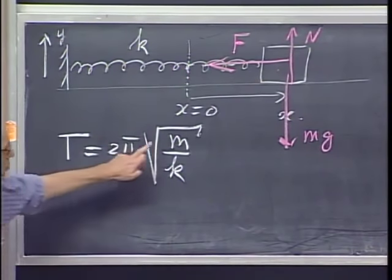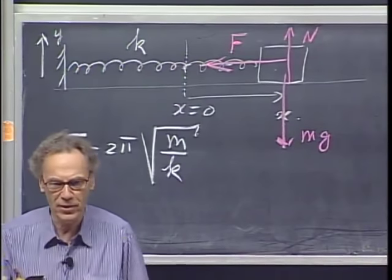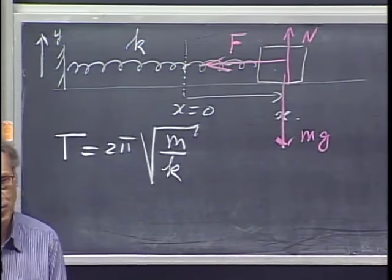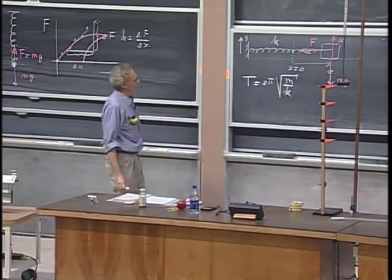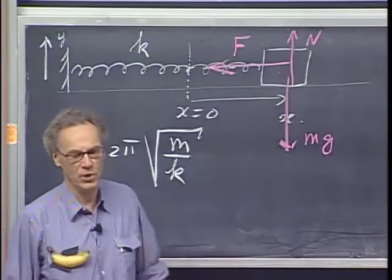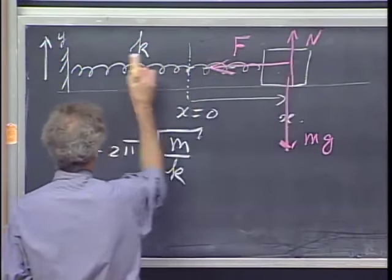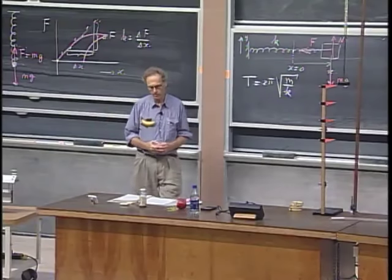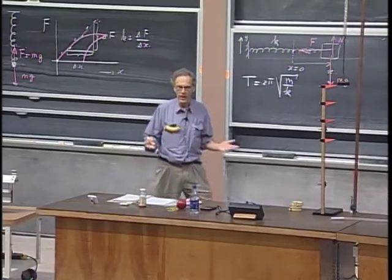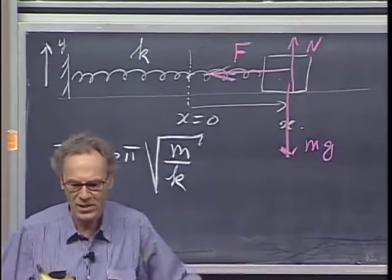The period — the time for the object to oscillate once back and forth — is completely independent of how far I move it out, which is very non-intuitive. Whether I oscillate it with a small or large displacement, as long as Hooke's Law holds, the period is independent of the amplitude. For the ideal case — Hooke's Law must hold, no friction, and the spring itself has negligible mass compared to the object (a massless spring) — I'm going to write down Newton's second law.